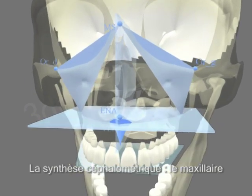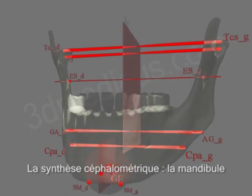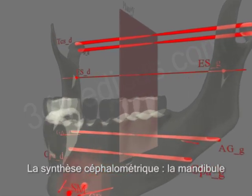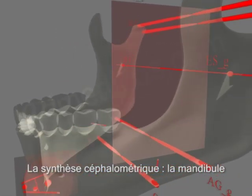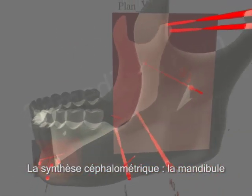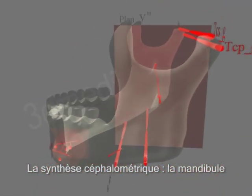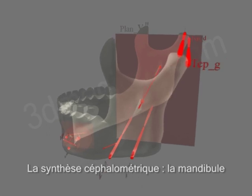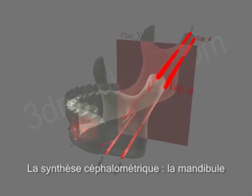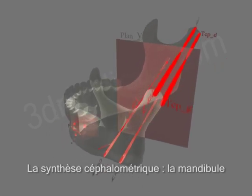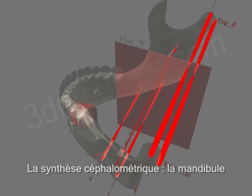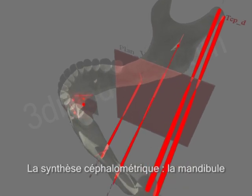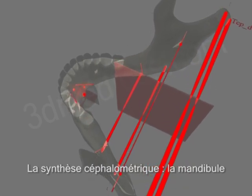The maxilla, and finally the mandible, as well as other anatomical videos about supra-hyoid and sub-hyoid muscles, which are in the making.